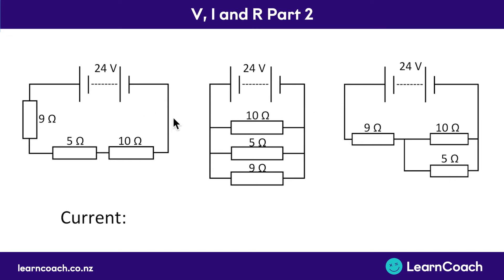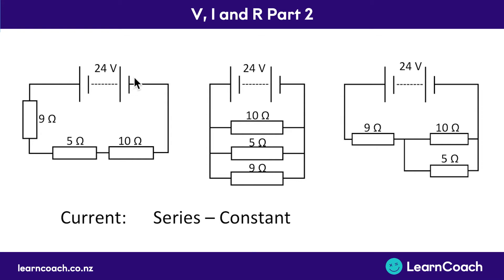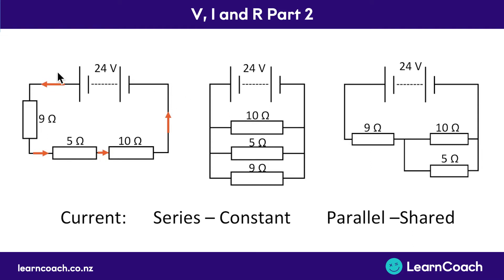The first thing we're going to look at is current. In a series circuit, current is constant all the way around. The current moves around the whole circuit without splitting or changing — it just carries on going all the way around. So the current stays the same the whole way around; it must keep going at the same speed.